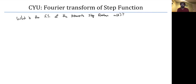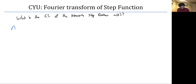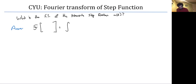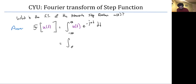Welcome back. Let's look at the answer. We're going to take the Fourier transform of U of t. The Fourier transform of U of t equals the integral from minus infinity to infinity of U of t times e to the minus j omega t dt. The step function allows us to simplify the limits from zero to infinity, since it's one only when time is positive. So this integral becomes the integral from zero to infinity of e to the minus j omega t dt.